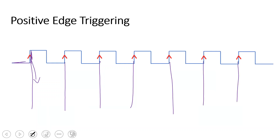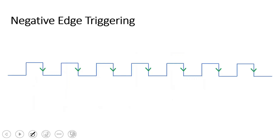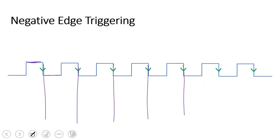So in positive edge triggering, at the low-to-high transition, the flip-flop changes state. Negative edge triggering is the trailing edge trigger — the high-to-low transition triggers the flip-flop. So: positive edge triggering uses the leading edge to trigger the flip-flop; negative edge triggering uses the trailing edge to trigger the flip-flop.